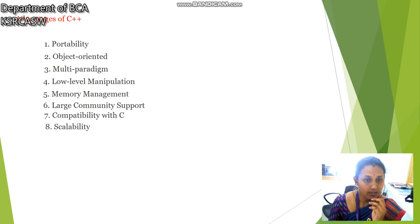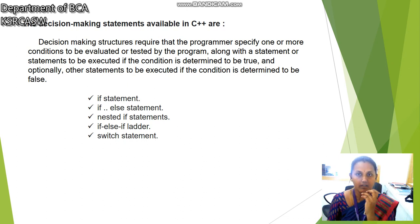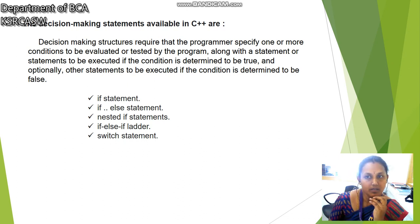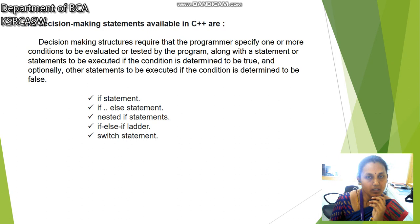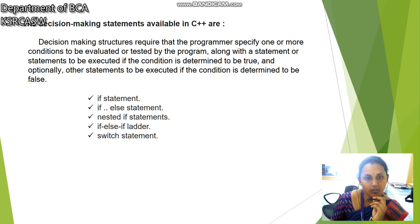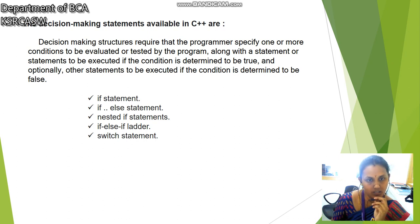Scalability means it is flexible for various use cases. Next, decision making statements available in C++. A condition statement is executed when the condition is true, and optionally another statement is executed if the condition is false. For example, if statement, if-else ladder, and switch statement. The if statement checks whether the condition is true; if so, the statement will be executed, otherwise it is terminated.